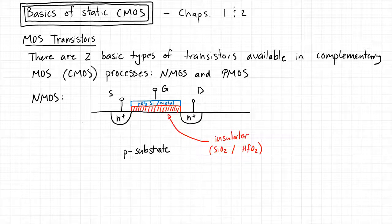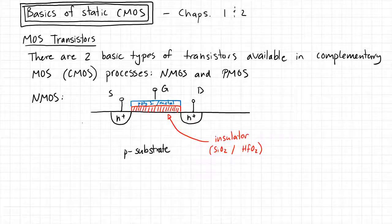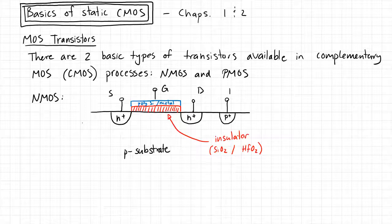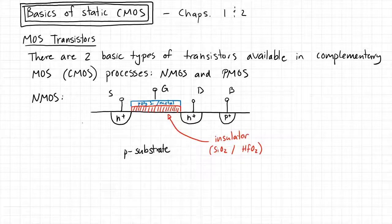This is a three-terminal device, but when we're implementing this in a bulk CMOS technology — meaning the entire substrate of the wafer is doped in one flavor — we actually also have a fourth terminal, typically drawn with a P-plus region. We call this the bulk or the body. We need to bias this P-substrate at some voltage.